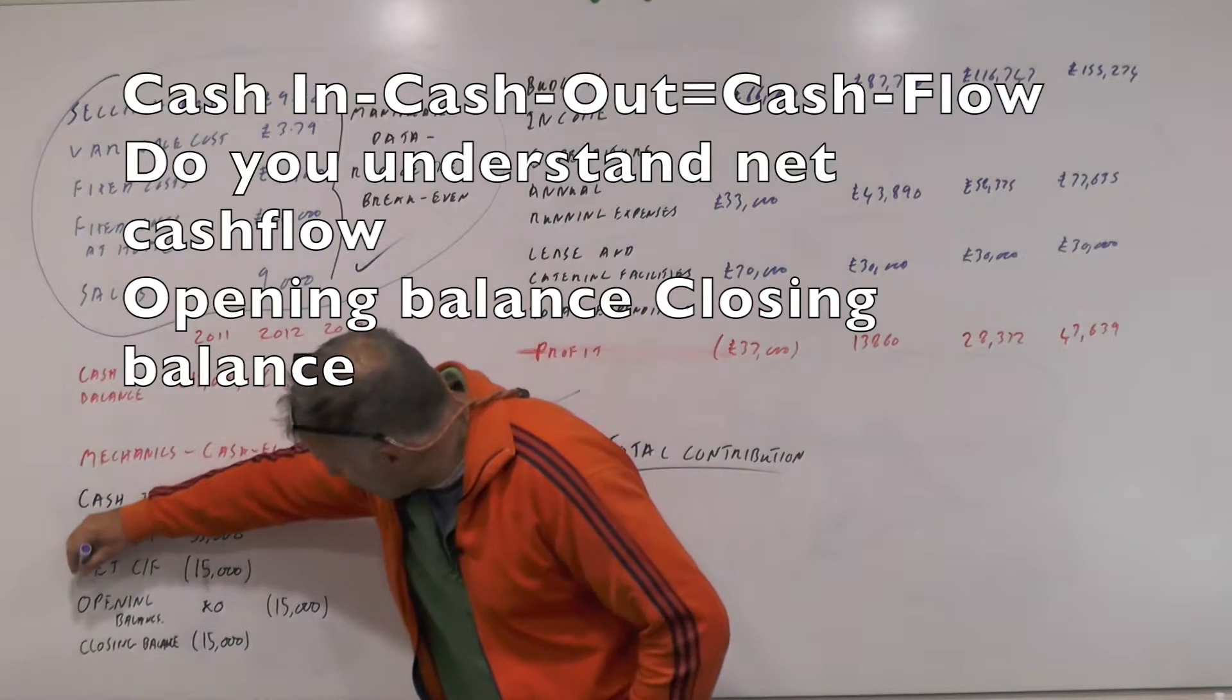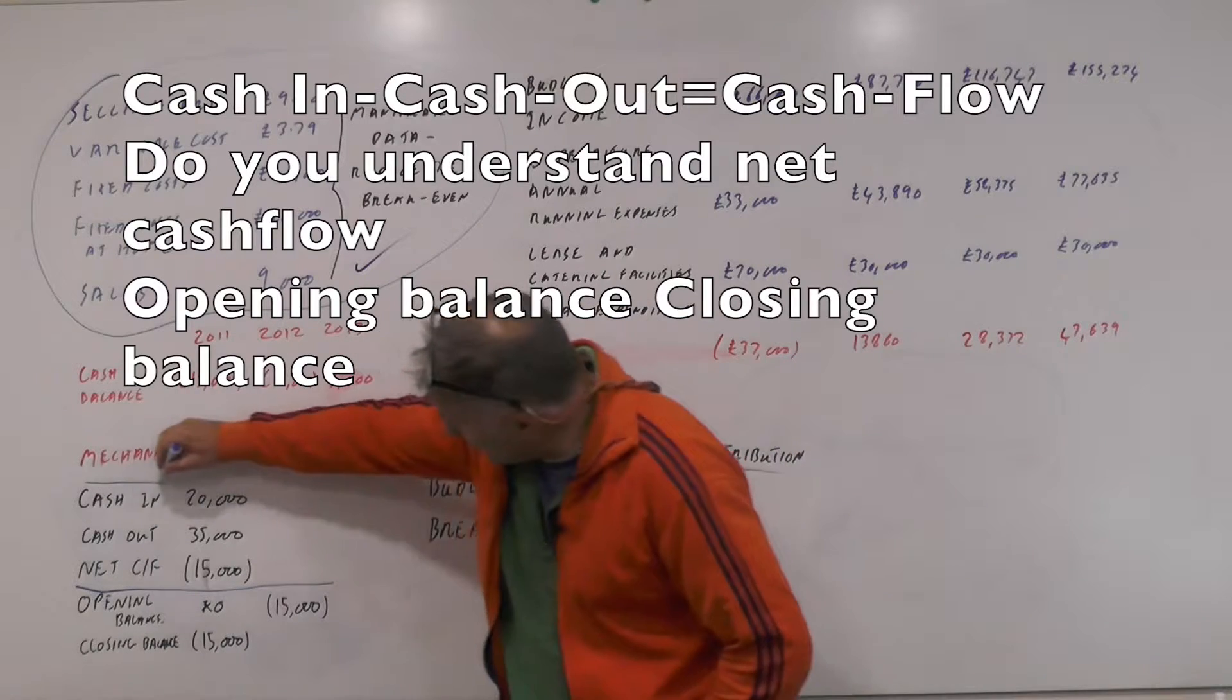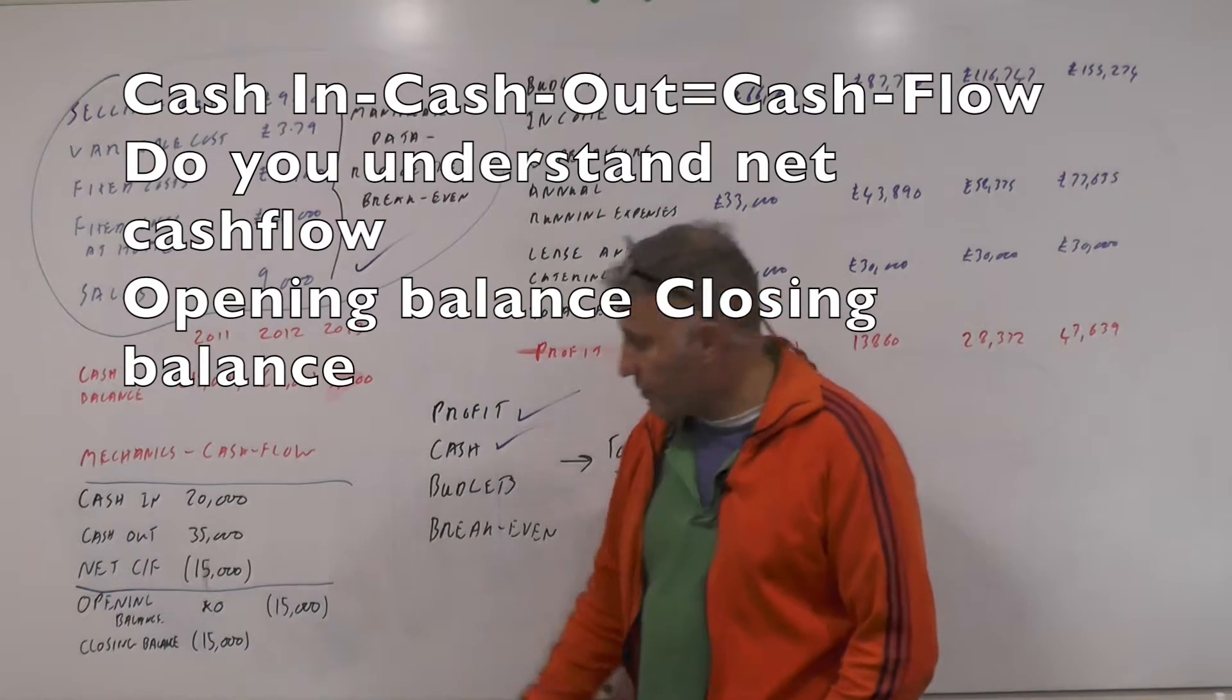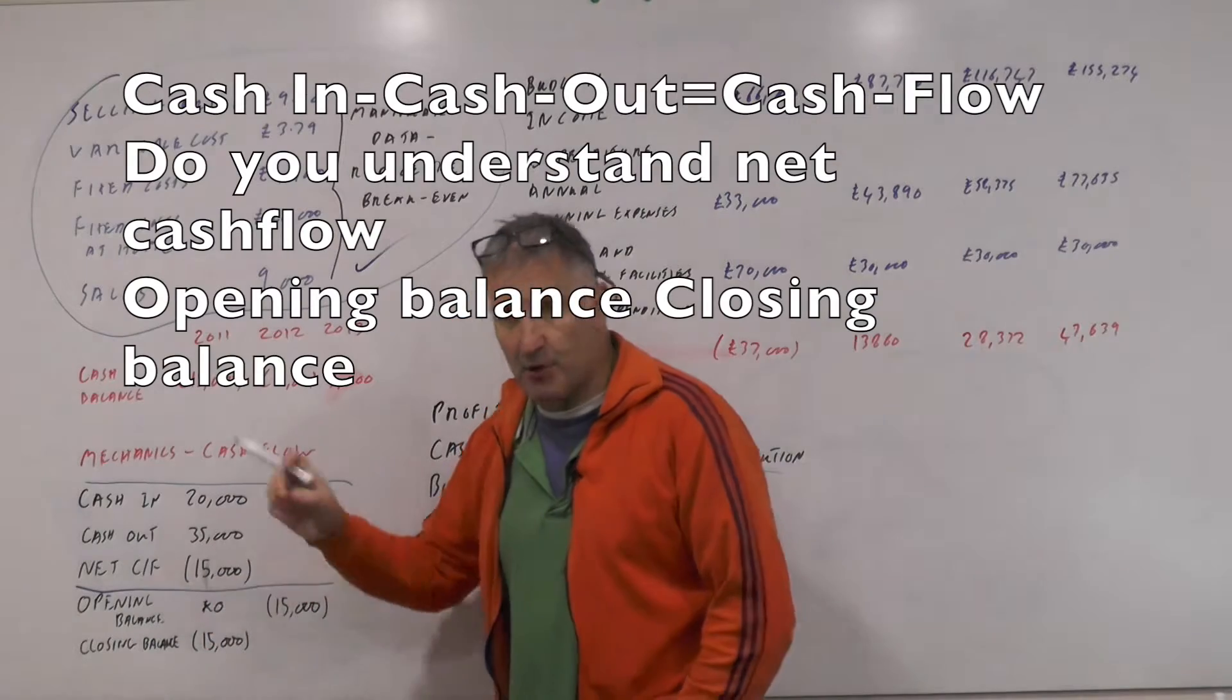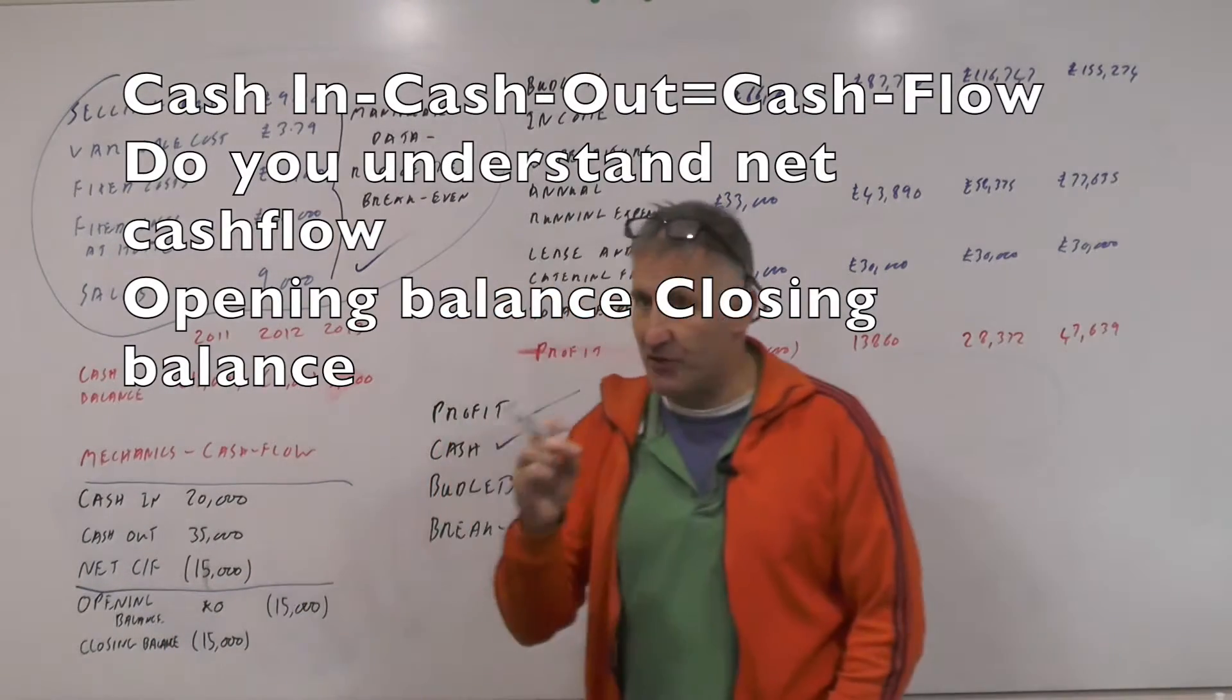The net cash flow is just a summary of this part of the cash flow. Your opening balance is your opening balance, how much money you have in at the start of the month. Your closing balance is how much you have at the end of the month.